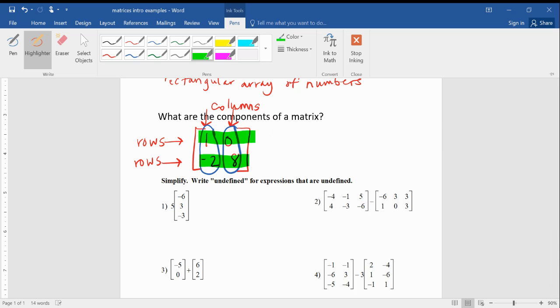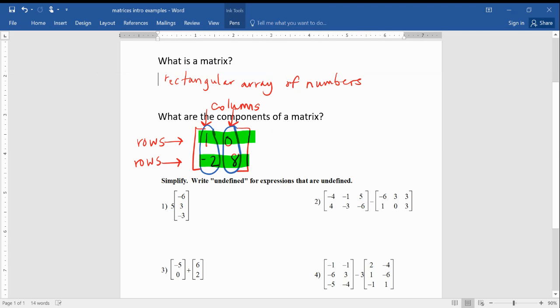So the things actually inside of the matrix, these brackets, the numbers themselves are called elements. Okay, so we've got rows, columns and then the elements would be 1, 0, negative 2 and 8.